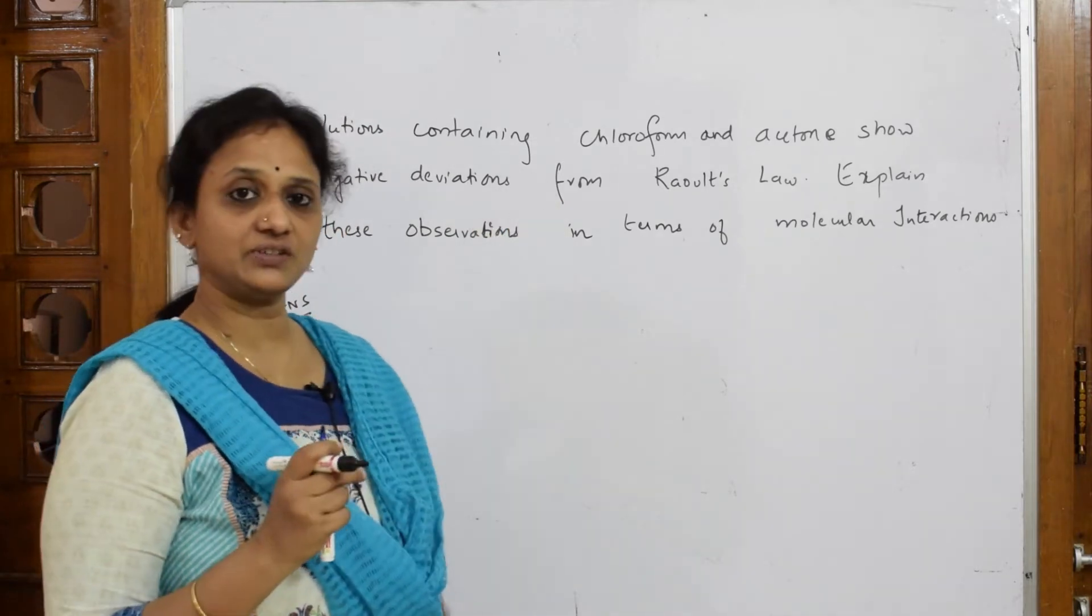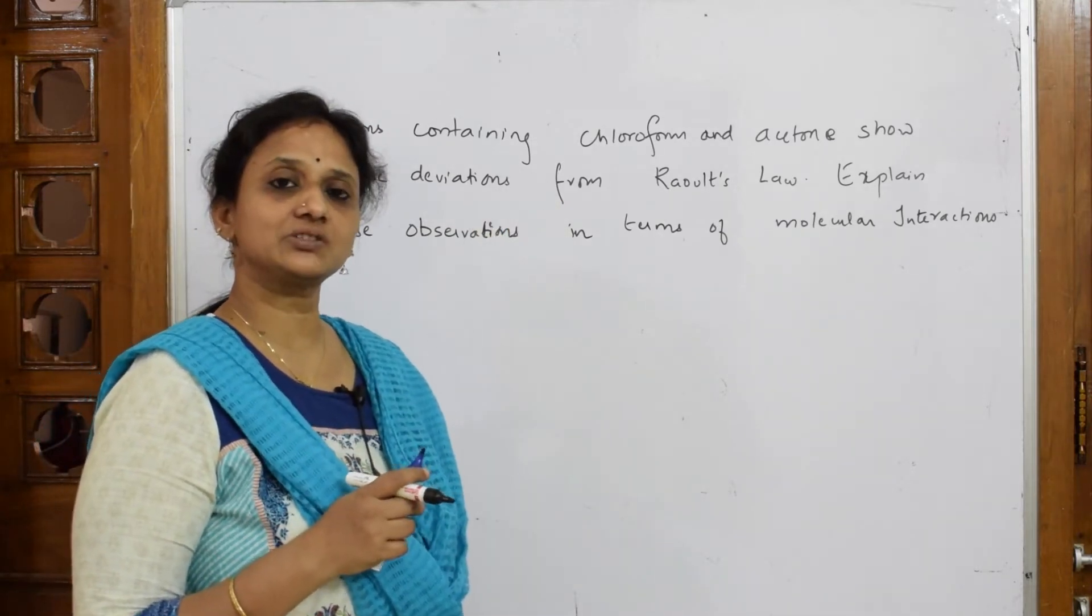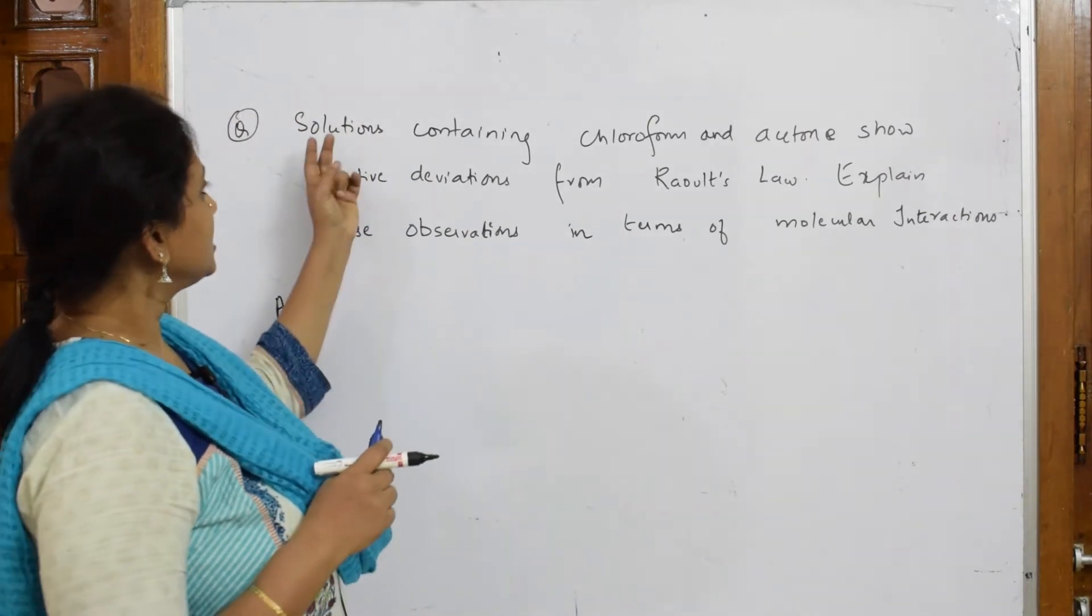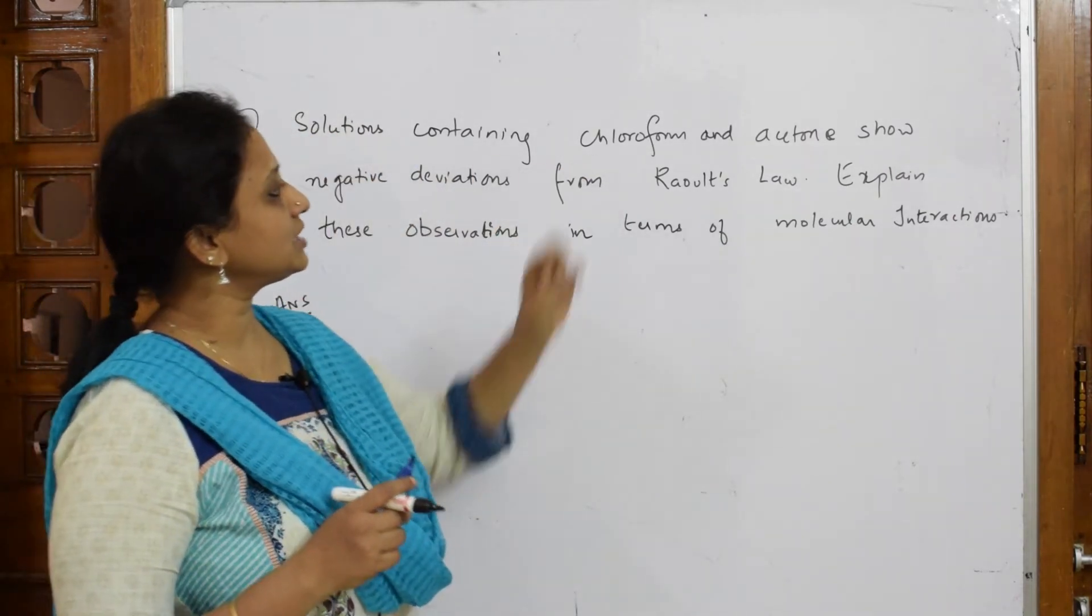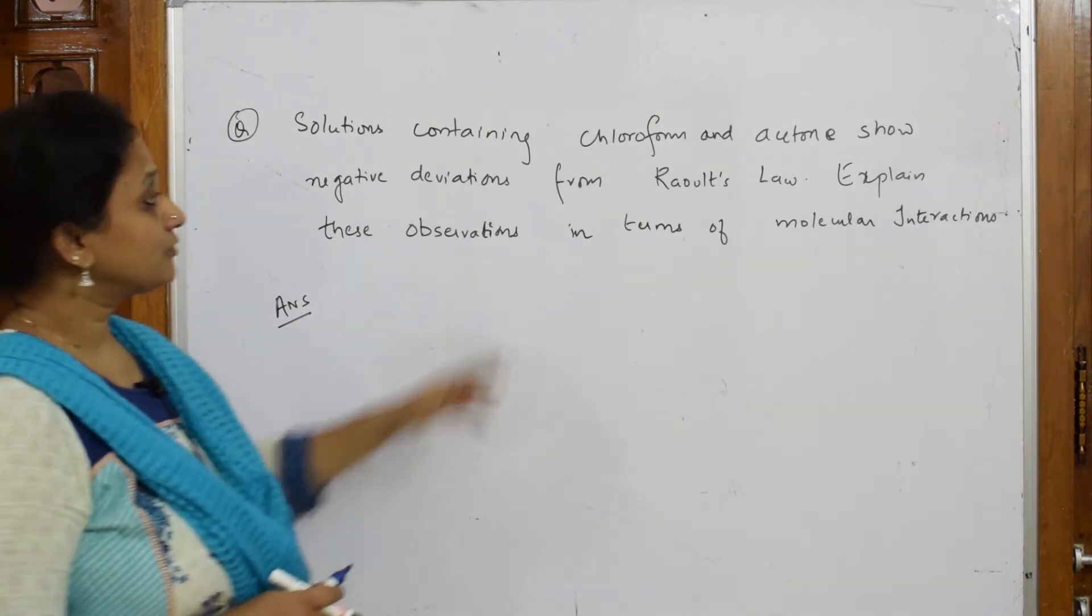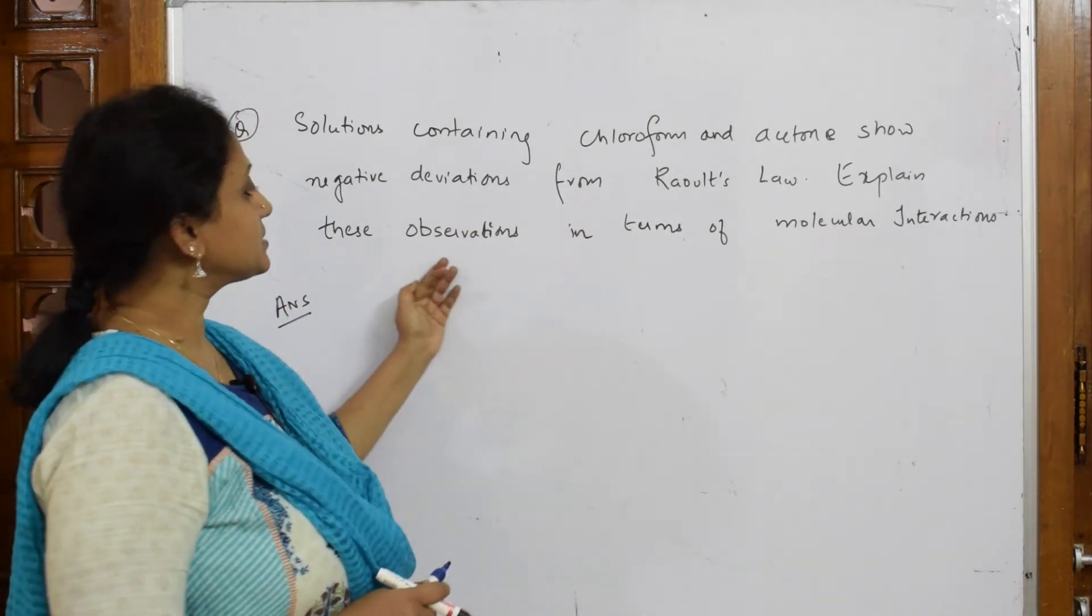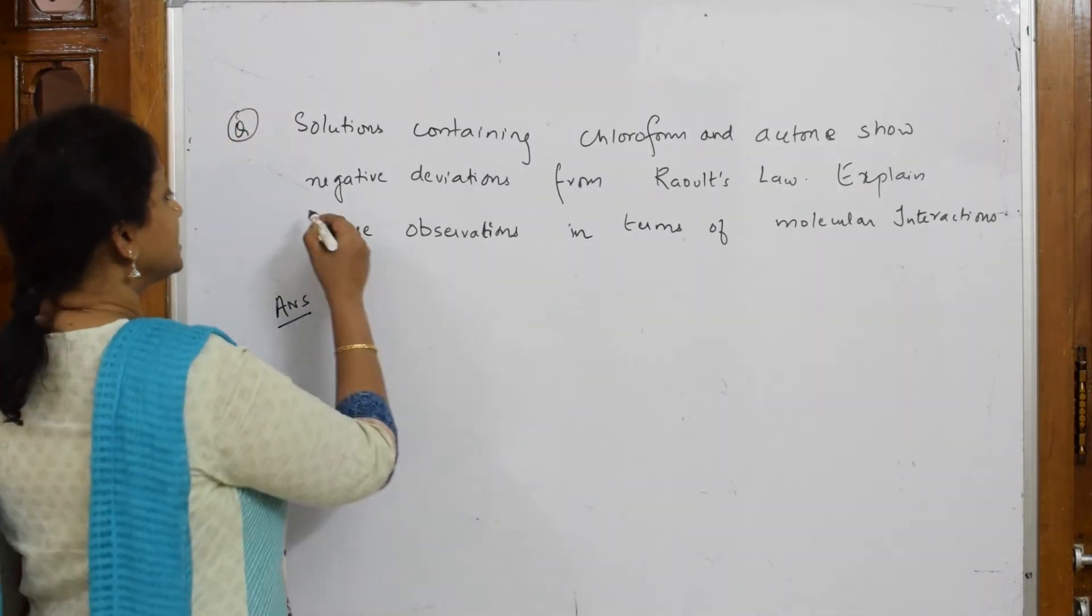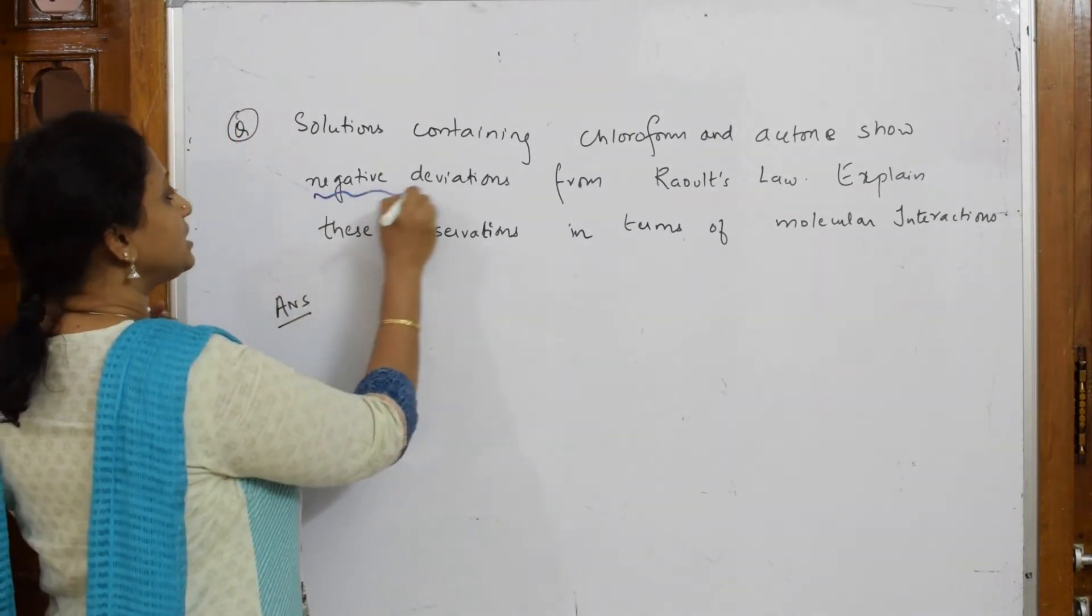They've asked me to explain based on structure and polarity. Now let us see this question. They are asking us: solutions containing chloroform and acetone show negative deviation from Raoult's law. Explain these observations in terms of molecular interactions. Now let's see - they said negative deviation.